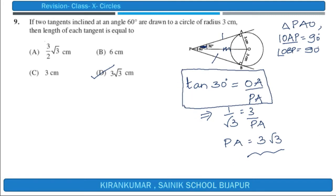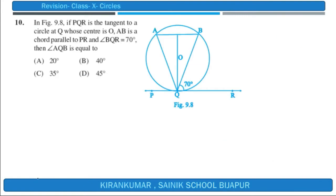Question number 10: in figure 9.8, if PQR is tangent to a circle at Q, O is the center, AB is a chord parallel to PR, and angle BQR equals 70 degrees, then angle AQB is equal to — we need to find this angle.